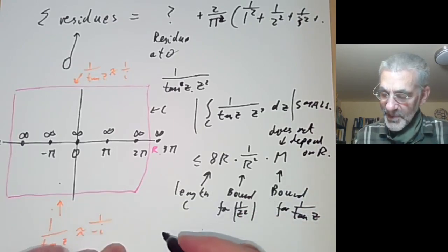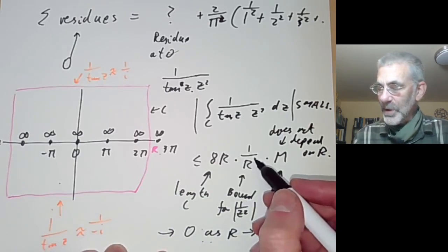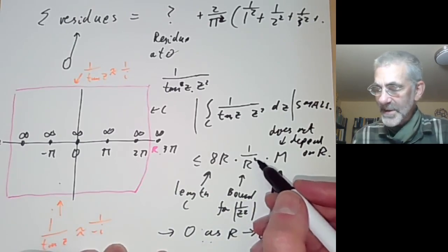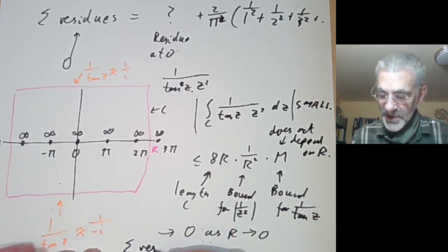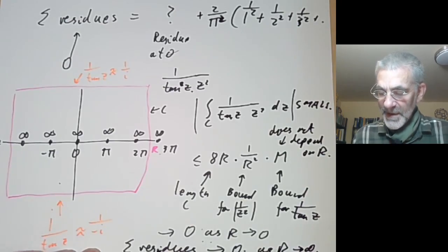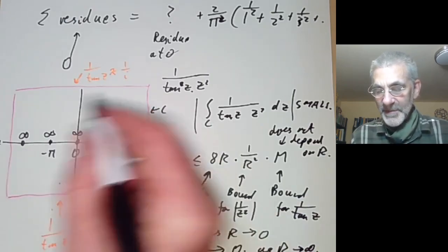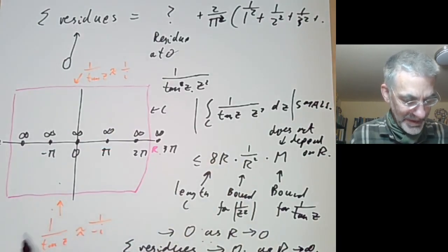This bound tends to zero as r tends to infinity because we have a 1/r² factor and a factor of r from the length of the contour. So the sum of the residues inside the contour tends to zero as r tends to infinity, which means the sum of all residues is actually zero.